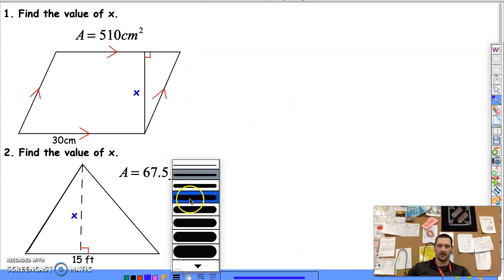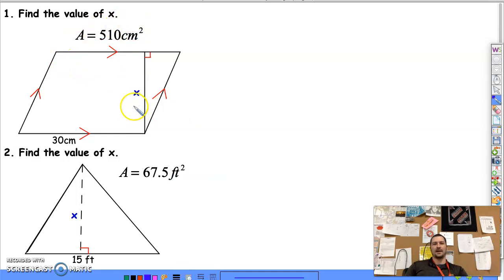All right, so now we want to find X. We know what the area is. So, first, you have to figure out what kind of figure we have. It's a parallelogram. So, area equals base times height. So, 510 is going to equal the base, which is 30, times the height. So, then we divide by 30. And, I should probably be able to do that in my head, but just to be safe, type it in on my calculator here. And, I get 17. And, we're finding the height. So, it's going to be 17 centimeters. Not squared, because it's not the area. It's just the height.